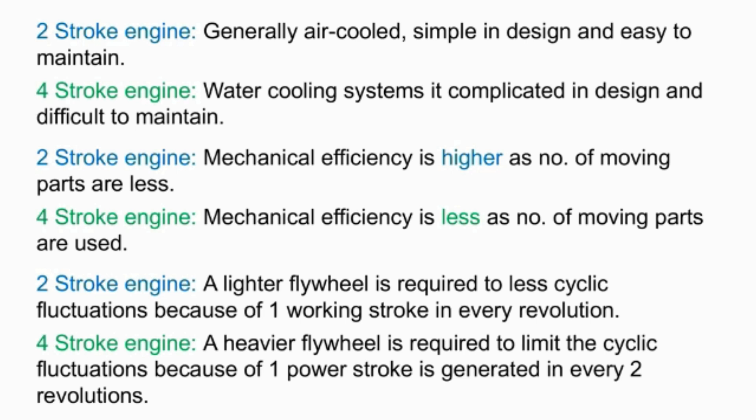In a two-stroke engine, a lighter flywheel is required due to fewer cyclic fluctuations, because there is one working stroke every revolution. In a four-stroke engine, a heavier flywheel is required to limit cyclic fluctuations, because one power stroke is generated every two revolutions.